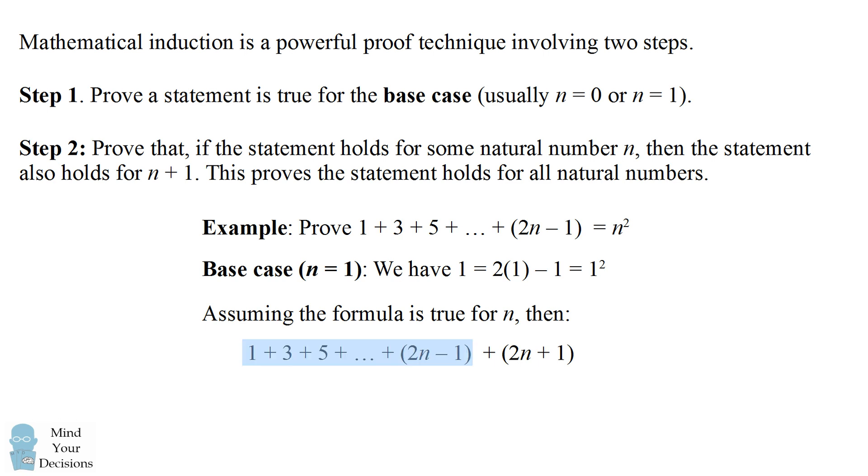We start out with the sum of the first n odd numbers, and we know that is equal to n squared by the inductive hypothesis. We have the sum of the first n plus 1 odd numbers is therefore equal to n squared plus 2n plus 1. We can now factor n squared plus 2n plus 1 to get n plus 1 the quantity squared. And this shows the formula also holds for the next odd number. Therefore, we have proven the statement by induction.